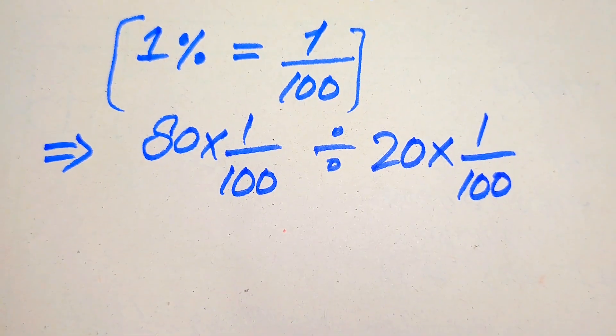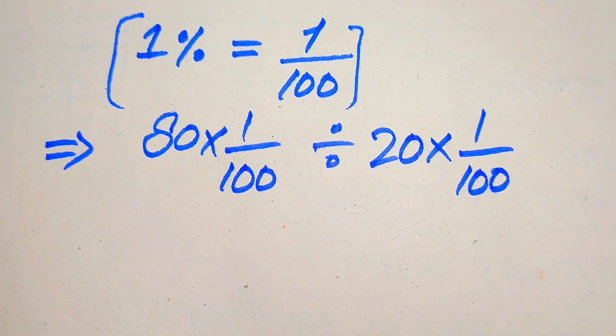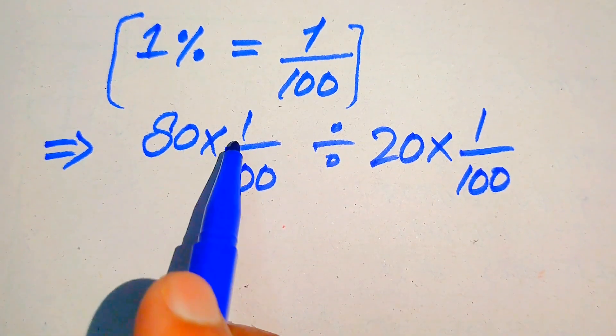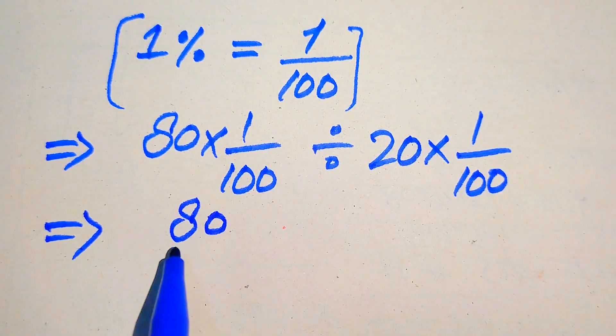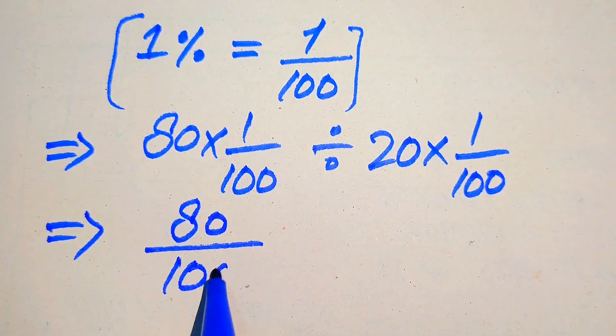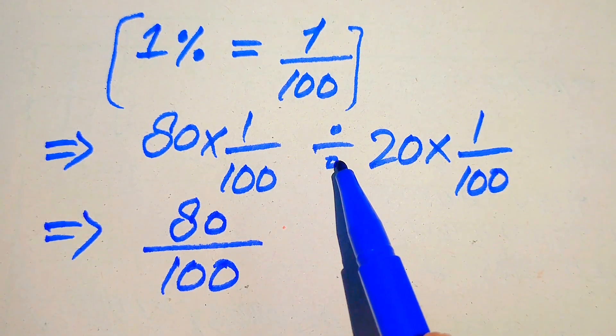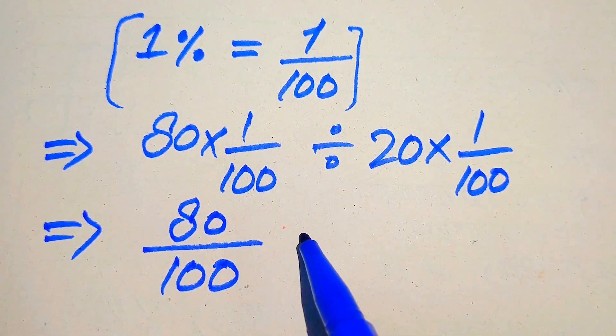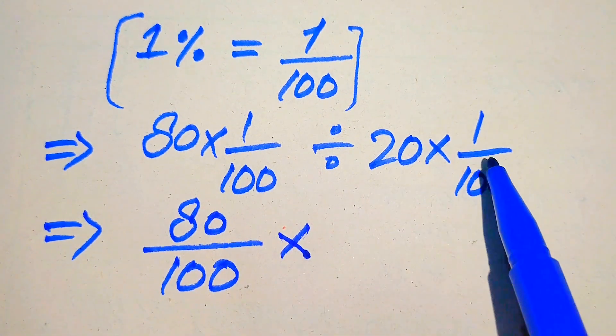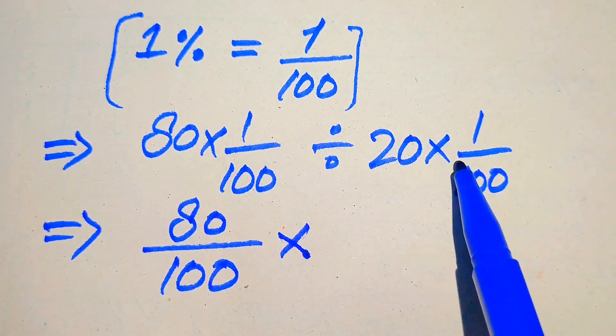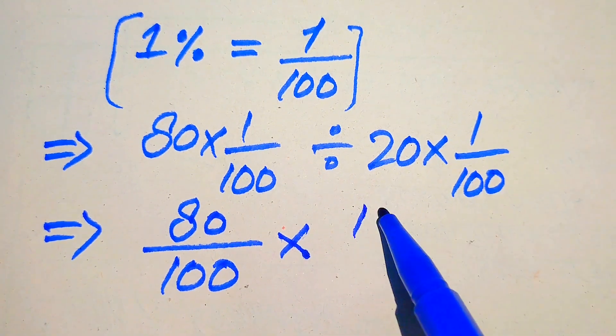We've applied the definition of percentage sign. Now we need to simplify the terms. We multiply 80 with 1 and get 80 over 100. We need to convert this division sign to a multiply sign, so we take the reciprocal of this term. 20 over 100 becomes 100 divided by 20.